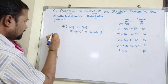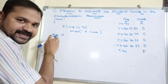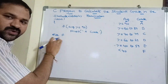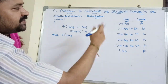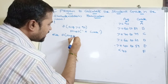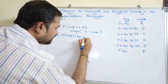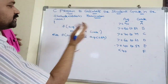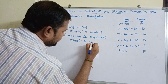The second condition: else if. Note that else and if are two different words — use a space between them. If the average is greater than or equal to 80 AND the average is less than or equal to 89 — both conditions must be true — then print grade B.